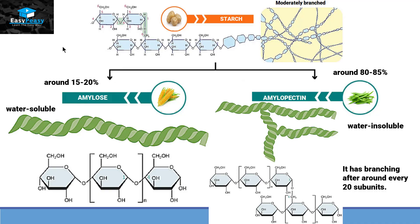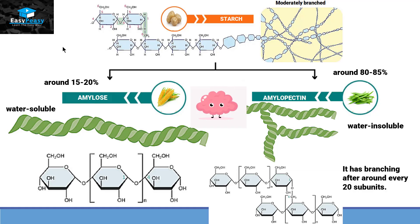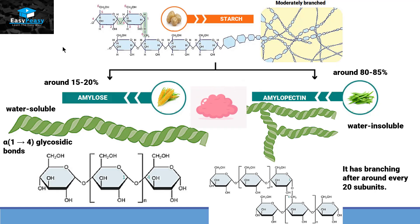Amylose is unbranched and cellulose is also unbranched and both are made up of glucose — so how do we differentiate amylose from cellulose? The answer lies in the alpha and beta condition. Amylose is made up of alpha 1,4 glycosidic bonds, while cellulose is made up of beta 1,4 glycosidic bonds.